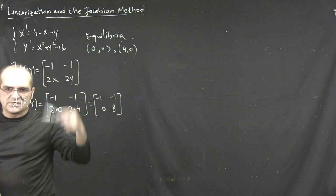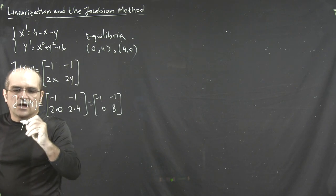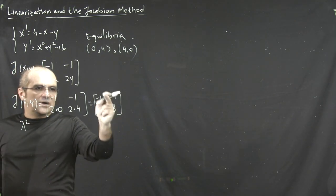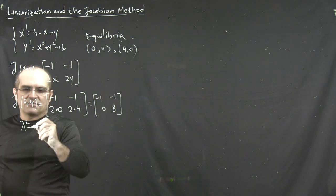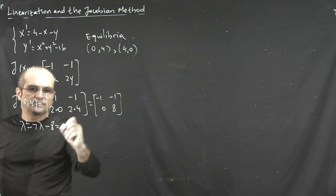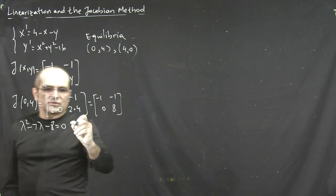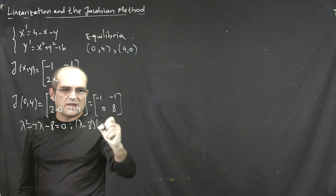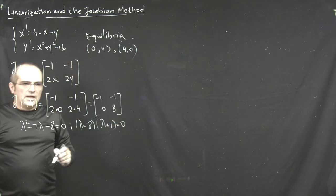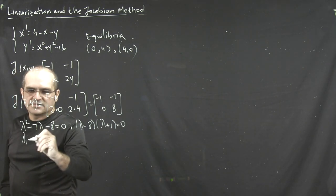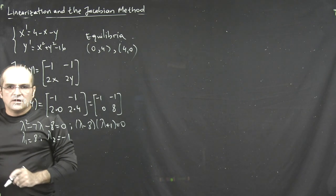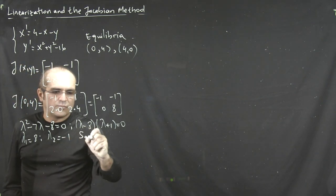I may add some of that later as an addendum to this class. So for now, just find the eigenvalues and use the linear classification to figure out the stability. The trace is 7. So that's going to be lambda squared minus 7 lambda and the determinant is minus 8. So notice this factors into lambda minus 8, lambda plus 1. And obviously one eigenvalue is 8. Like I said, the other one is minus 1. And so therefore you have a saddle point.